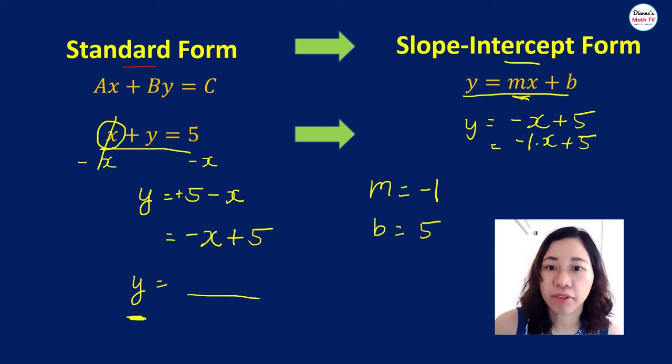The intercept here refers to the y-intercept. We will talk about intercepts on the next video lesson. But for now, we just know that the m here, the slope is negative 1 and the y-intercept is equal to 5.